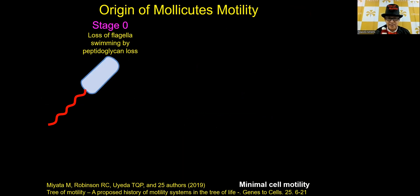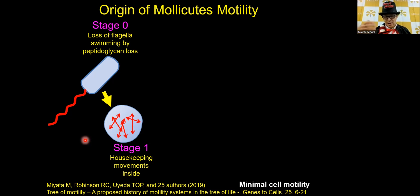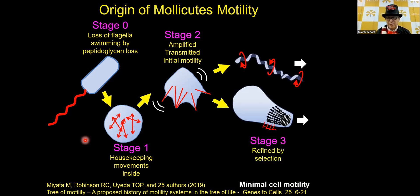We summarize again the origin of mollicute motility. The original bacterial motility is based on rotation of the tail called the flagella. They lost the cell wall and also the flagella motility systems. But if we look at the activity of cell survival, we can see that many systems have physical movements. Mollicutes used these systems to amplify and transmit inside motility to the surface, achieving the initial stage of motility. They then polished their systems for survival, and they became the mollicute motility systems of today.